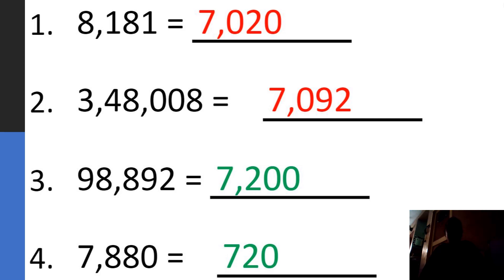Here, you have to find the difference of the place values of 8. That means you have to find the place values of 8, write the bigger number on top and smaller number below, subtract, and find the difference. The answer for the first one is 7,020. The second one is 7,092, third one is 7,200, and fourth one is 720.